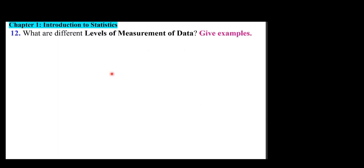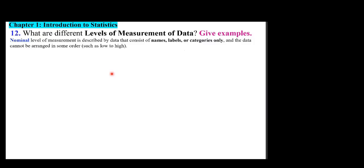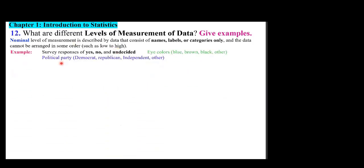What are the different levels of measurement? Nominal level of measurement is described by data consisting of names, labels, or categories only; data cannot be arranged in any order. In short, it's qualitative. Examples include survey responses (yes, no, undecided), eye colors (blue, brown, black), and political party affiliation.